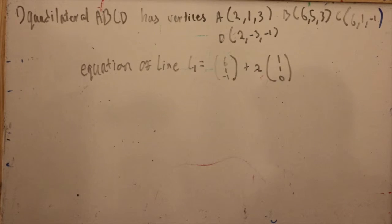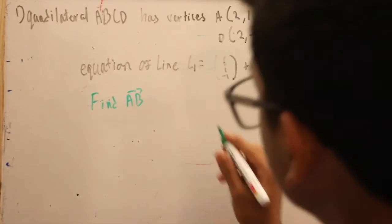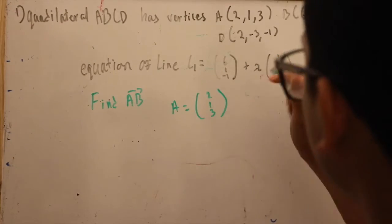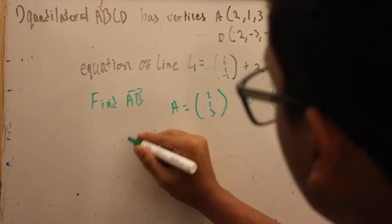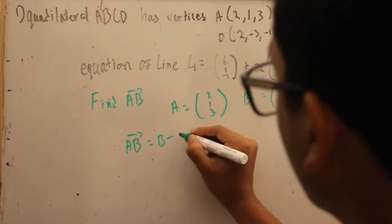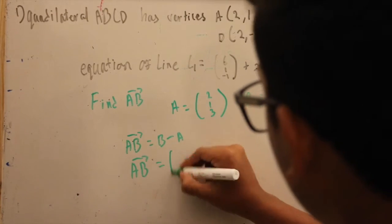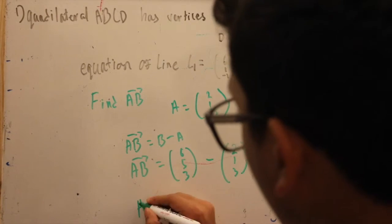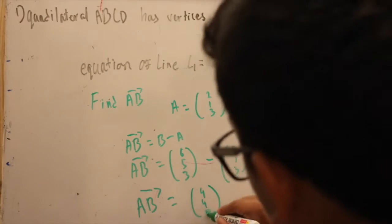The question asks to find vector AB. In order to find vector AB, you simply subtract B with A, B being (6, 5, 3) and A being (2, 1, 3). Subtracting these two coordinates, we get the final value of vector AB to be (4, 4, 0).